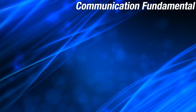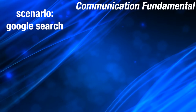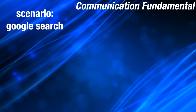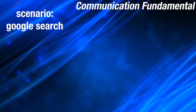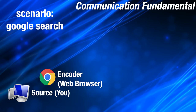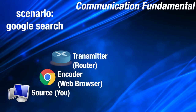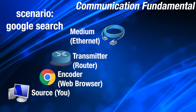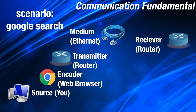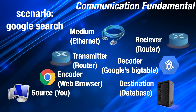The fundamental thing to understand about communication is sending something from one place to another. The simplest way to explain this is: a source, the encoder, the transmitter, the medium, the receiver, the decoder, and then the destination.